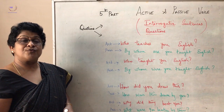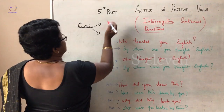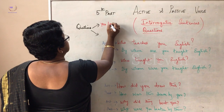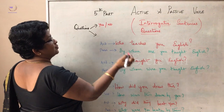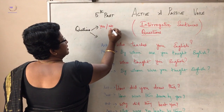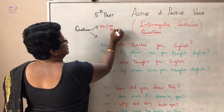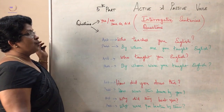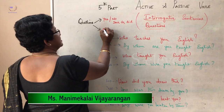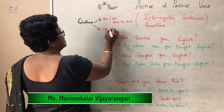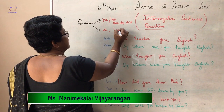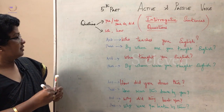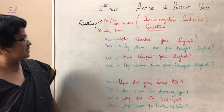Now, as you all know, questions are of two types. One is yes or no questions. We have dealt with yes or no questions using does, do, and did. Next, we will see WH questions — that is, questions starting with WH words and how.